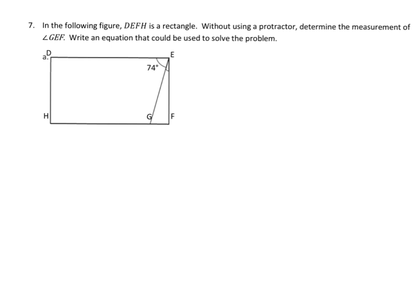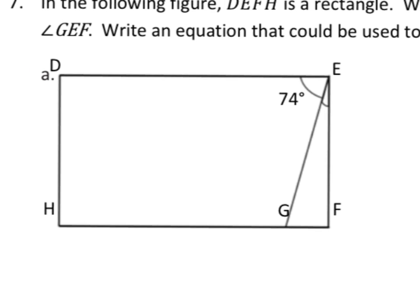The last problem says that in the following figures, DEFH is a rectangle. So we have D, E, F, H as a rectangle, and we know that in a rectangle all the corners are 90-degree angles. Without using a protractor—and that's been the point of this whole video—we need to determine the measurement of angle GEF. So where is G? Here's G, there's E, there's F. Angle GEF is this tiny little sliver right here. We know this whole corner is a 90-degree corner because it's a rectangle.